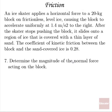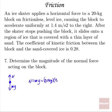Number seven: determine the magnitude of the normal force acting on the block. In the vertical direction we have the normal force up and the gravitational force — the weight — down. Those must be equal, otherwise the block would accelerate up or down. So the normal force equals the weight: 20 kilograms times 9.8 meters per second squared, which is 196 newtons.